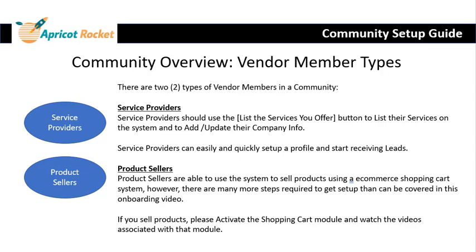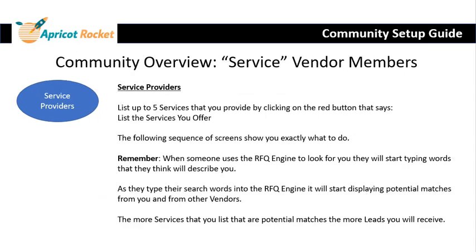Creating a profile as a service provider is very easy and quick, and you can get set up quickly to start receiving leads. If you sell products, it's a little more complicated and takes more time. You can use the system to sell products, but you do have to utilize the built-in shopping cart to put those products into the system so they can be sold on the community marketplace. If you sell products, activate the shopping cart module in your dashboard, watch the videos, and reach out to Apricot Rocket if you need help. For service providers, you're allowed to list up to five services, and the more services you list as potential matches, the more leads you're likely to receive.